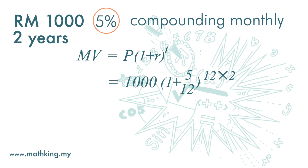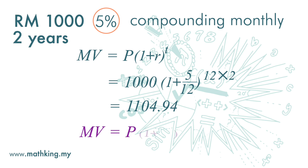After two years we will get one thousand one hundred and four ringgit 94 cents. The final formula is: matured value equals principal times one plus yearly interest rate divided by the number of times the interest is compounded per year, to the power of the total number of times the interest is compounded.